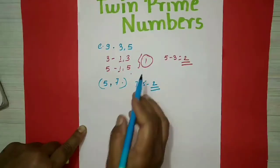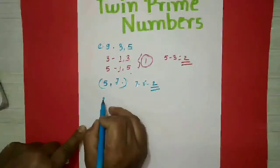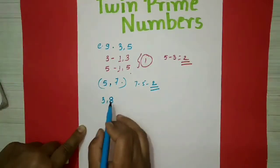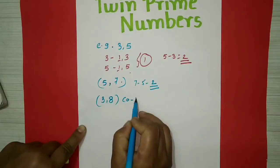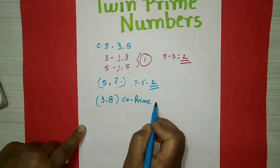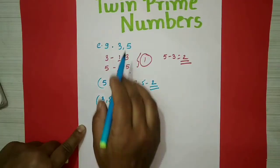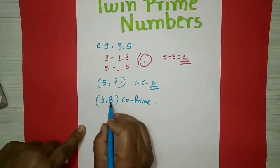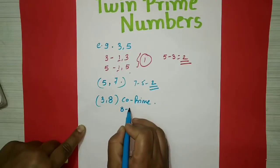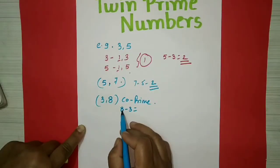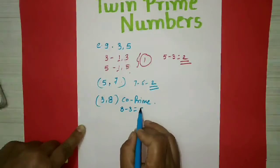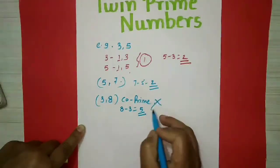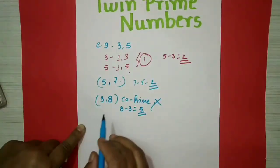Again, one more example: 3 and 8. Both numbers are co-prime numbers, but these two are not twin prime numbers. Why? Because the difference between these two numbers is 8 minus 3, which equals 5. We need the difference to be 2, so these two are not twin prime numbers.